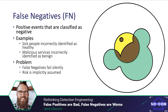A false negative is defined as positive events that are classified as negative — sick people incorrectly identified as healthy, or malicious services incorrectly identified as benign. In the graphic, false negatives are shown in yellow where predicted negative events and condition positive events overlap. False negatives represent a large societal or organizational risk. Unfortunately this failure is often silent, as a second test is often not applied — a sick person may go about their life thinking they're healthy, or a malicious service will remain undetected.